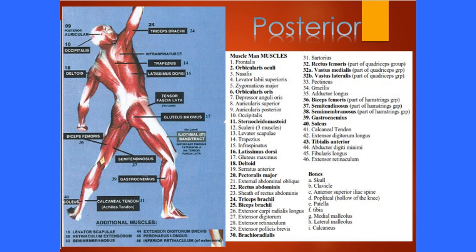The hamstrings include biceps femoris at number thirty-six, semitendinosus next to it, and semimembranosus — the most medial, not shown on this image. Coming down the back of the leg, gastrocnemius is the calf muscle, with soleus beside it. From gastrocnemius, the calcaneal tendon — commonly called the Achilles — attaches to the calcaneus. Extensor digitorum longus extends the digits and is a longer muscle.